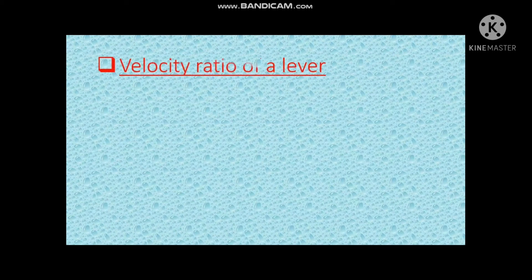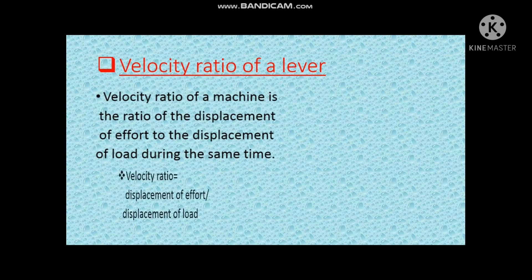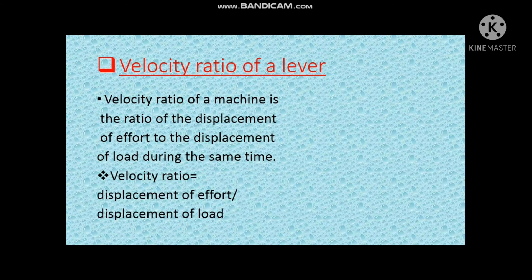Velocity ratio of a lever: The velocity ratio of a machine is the ratio of the displacement of effort to the displacement of load during the same time. Velocity ratio equals displacement of effort divided by displacement of load.